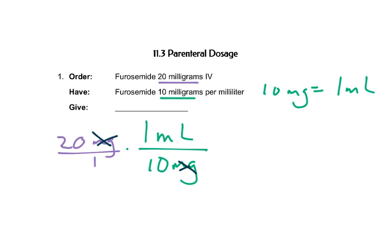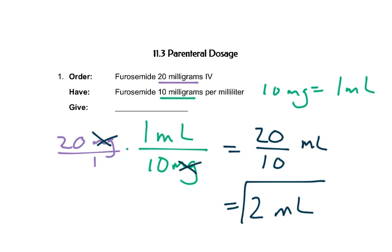That makes the milligrams cancel out. Multiply straight across, so we have 20 times 1 is 20. 1 times 10 is 10. This is in milliliters. 20 divided by 10 is 2 milliliters. So this patient would get 2 milliliters of the IV fluid.